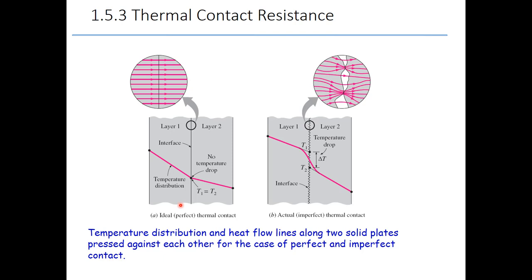This imperfect contact in the actual situation introduces what we call an insulator within this gap region. This gap region might be filled with air, and when it is filled with air, it can act as an insulator, meaning it can reduce the heat transfer rate Q dot.